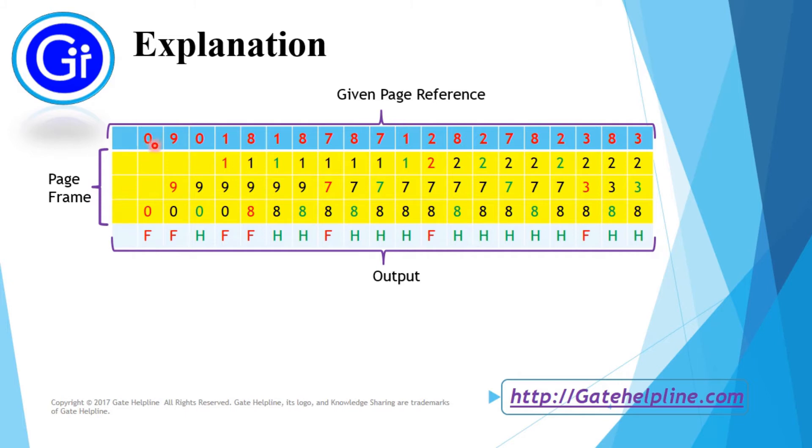So when 0 comes, there is no page reference for 0 in the memory at this moment. So we will put 0 at any place and consider it as page fault. Similarly 9 comes, there is no page reference for 9 in the given page reference. So we will put 9 at second place and consider it as second page fault.